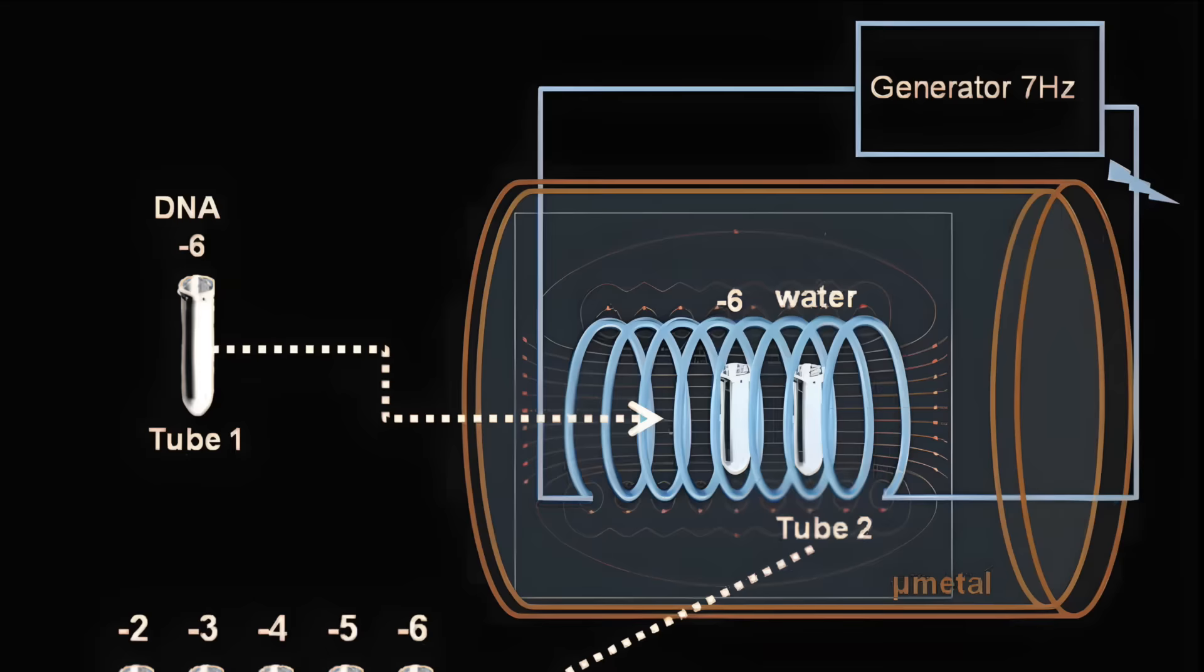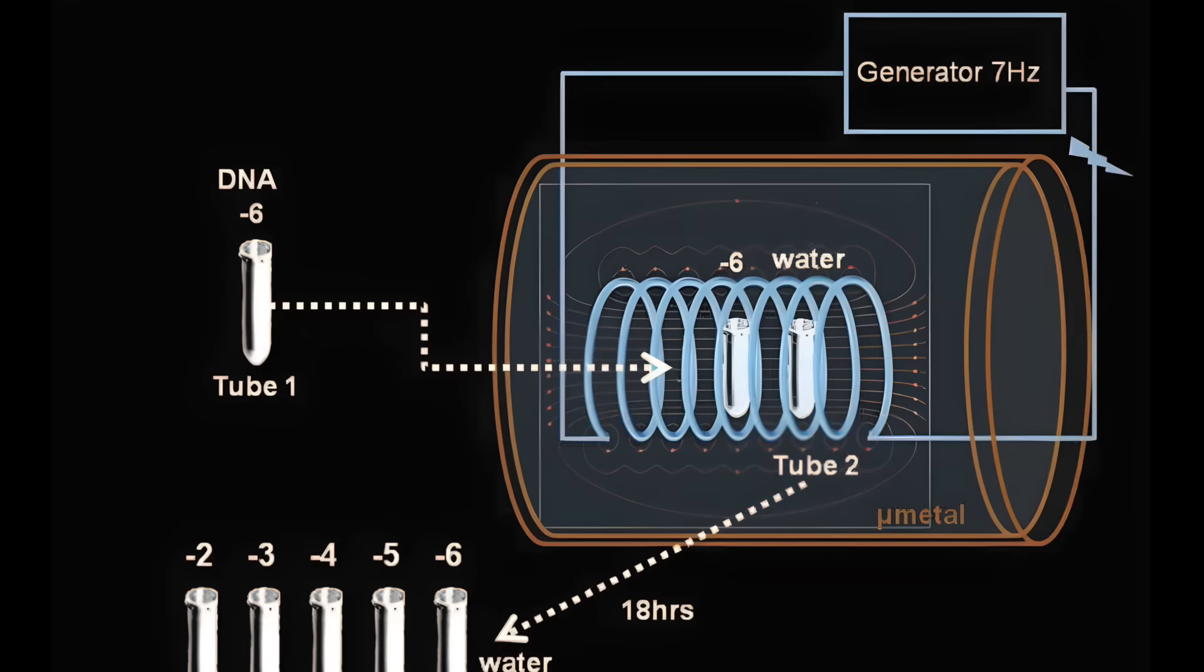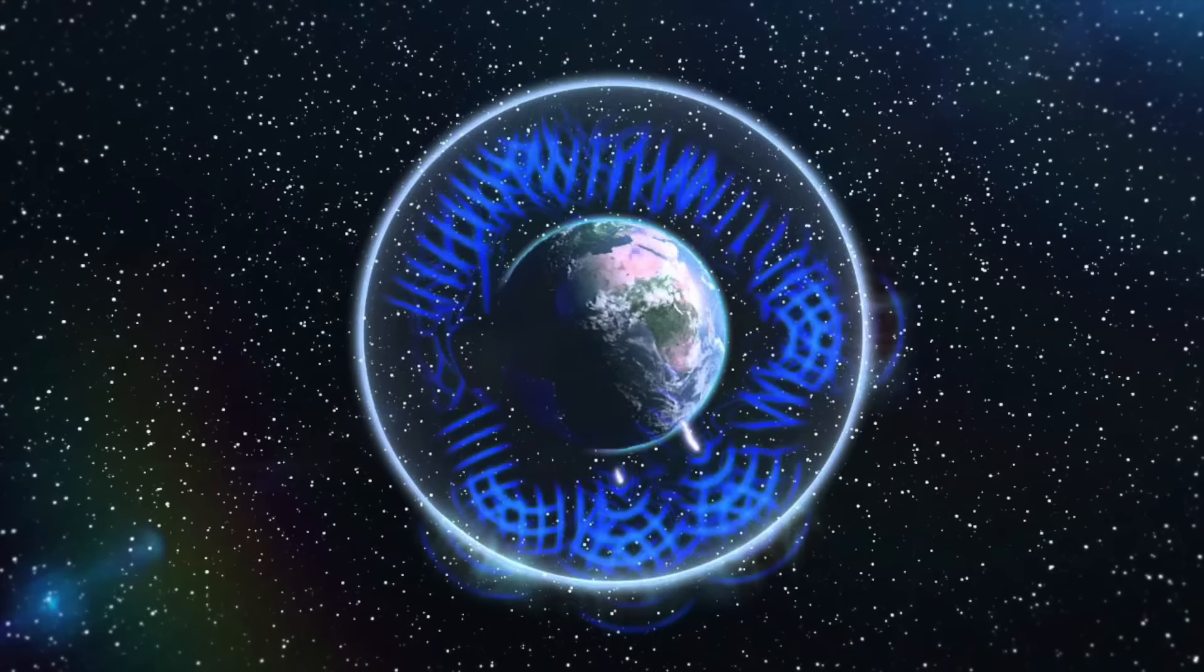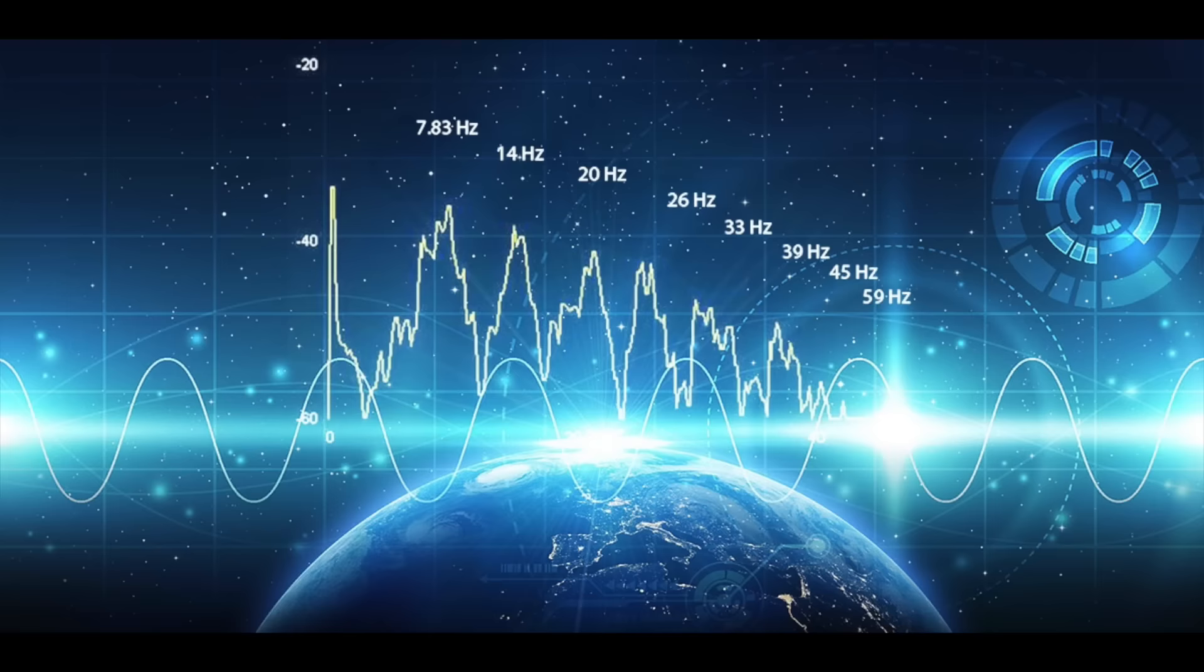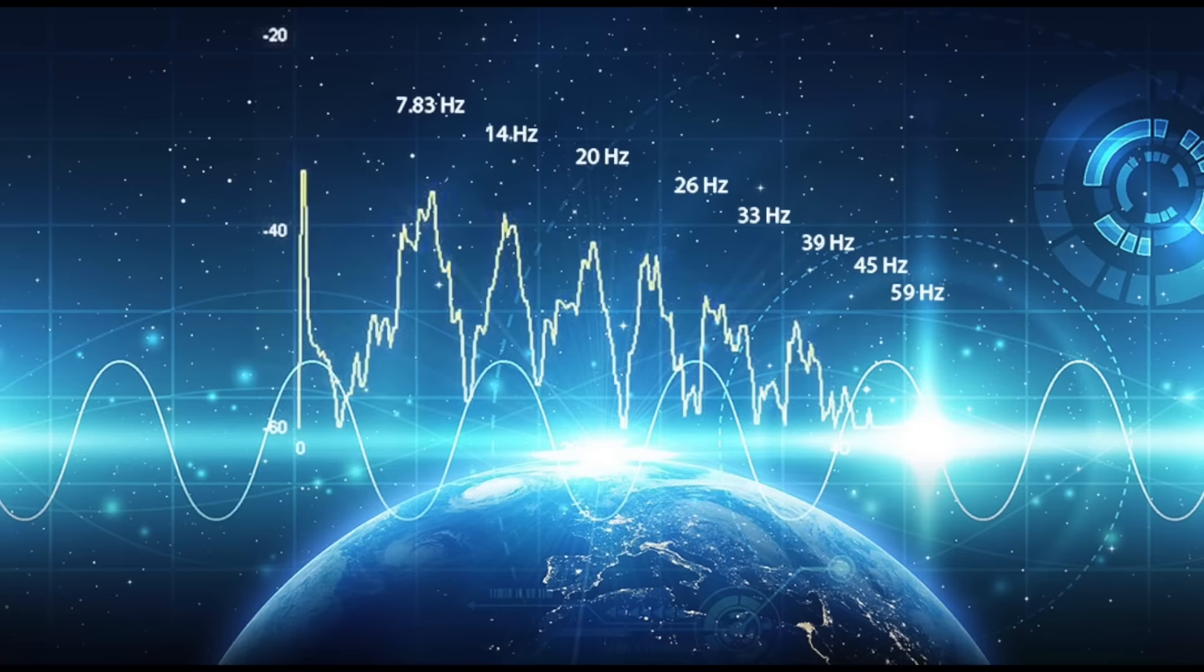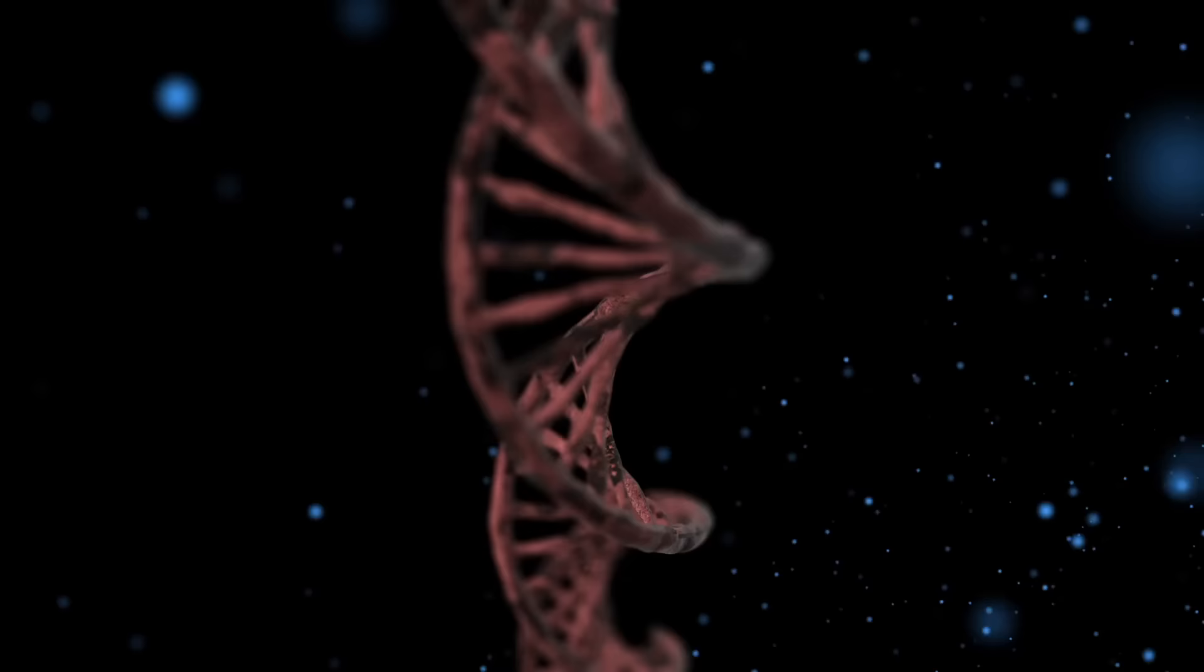What frequencies worked best in this experiment? The results were clearest when the initial strand was energized with 7 Hz, 14 Hz, or 28 Hz radio signal. Of course, these are the resonant frequencies of the entire electrical body of the Earth, known as the Schumann resonances. That is worth saying a second time. The entire electrical body of the Earth vibrates loudest at 7, 14, and 28 Hz.